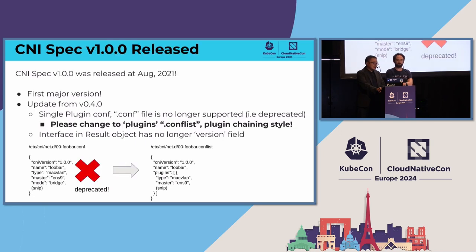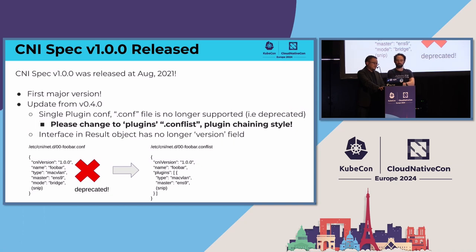In August 2021, roughly three years ago, CNI spec version 1.0 was released. This is of course the first major version. The previous version, 0.4.0, had some changes, but the notable big change is that .conf is deprecated. Previously at spec version 0.4.0 we supported two types of configuration: .conf and .conflist. But at spec version 1.0, only .conflist is supported, which is the plugins array in chaining format. If you're introducing CNI spec version 1.0 to your environment, please check that your configuration file ends with .conflist instead of .conf, and the plugins field is used to describe each CNI configuration.